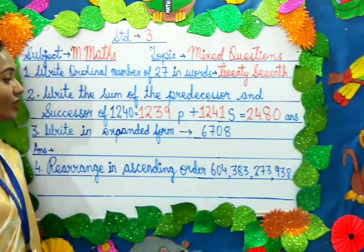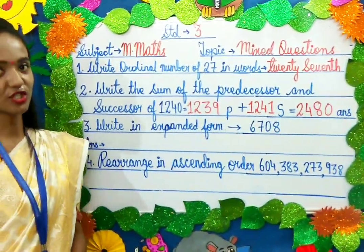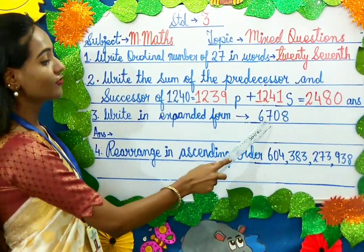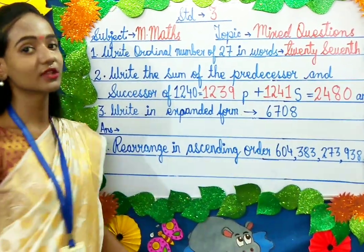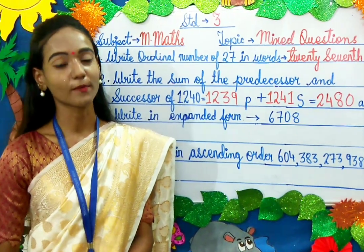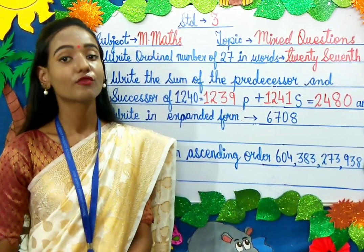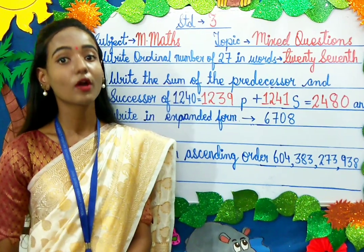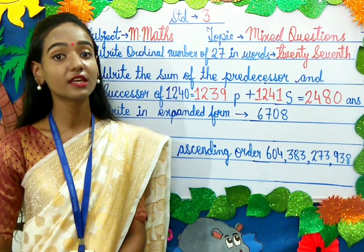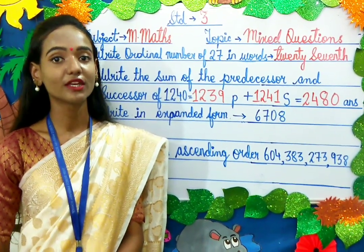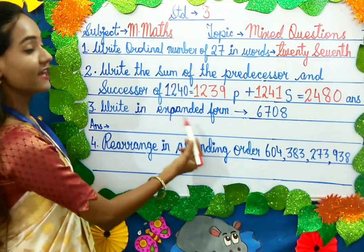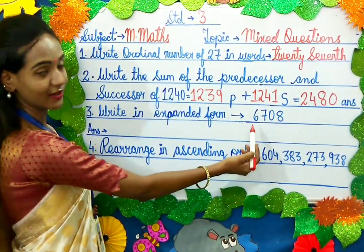Moving on to the next question. Write in expanded form of 6708. Before that, what is expanded form and what is short form? A number is said to be in expanded form when it is broken up according to its place value. When we write a number using digits, it is said to be a short form. Come on children, let's solve it.